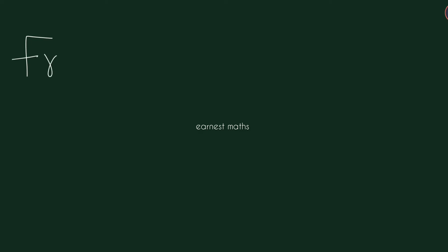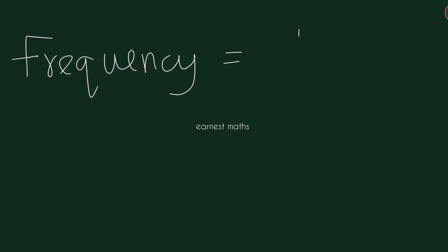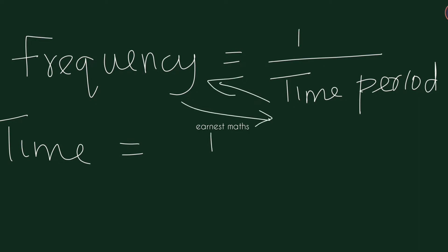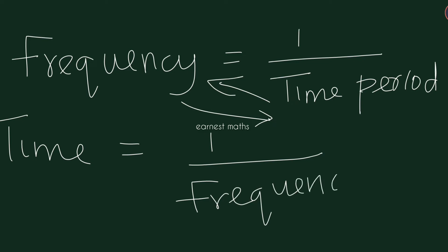Time period is asked. Formula: frequency is equal to 1 divided by time period. Therefore, time period is equal to 1 divided by frequency. This is the formula.